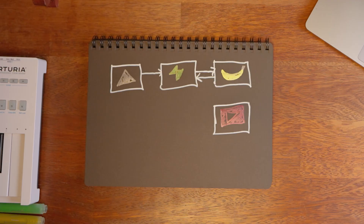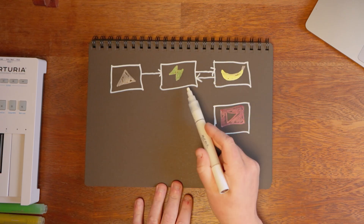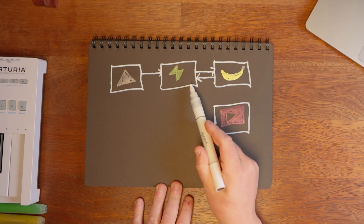Instead, because we're using Supabase, we can move this work to a background task. So once our first edge function gets back the image from the NanoBanana API, we want to send it to another edge function.